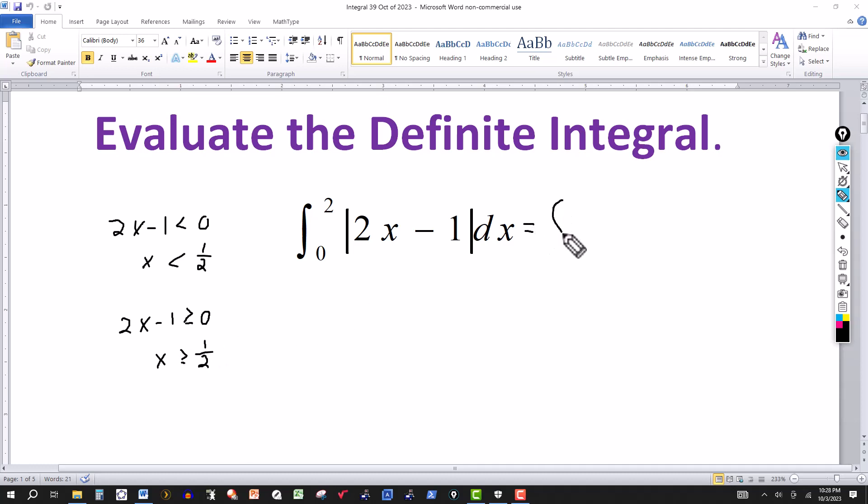So I'm going to break this up into two integrals from 0 to 2, and I'm going to use this 1 half as the middle point. So when x is less than 1 half, 2x minus 1 is negative, so to remove the absolute values I have to take the negative of that. The first integral is from 0 to 1 half of -(2x-1) dx. And then plus the integral from 1 half to 2, where x is greater than 1 half so 2x minus 1 is positive, this would just be 2x minus 1 dx.